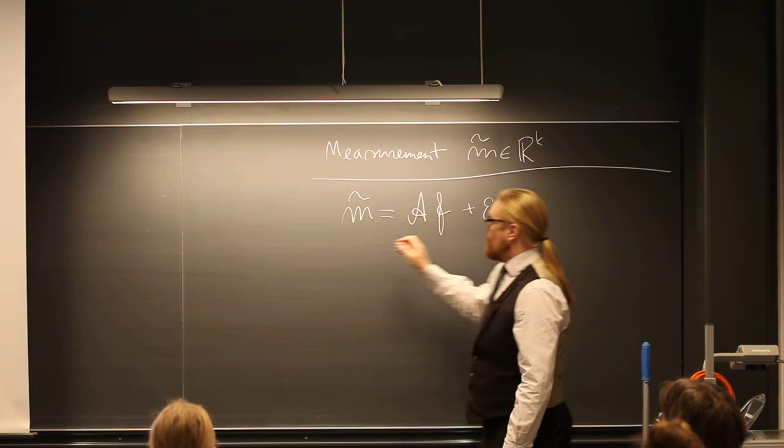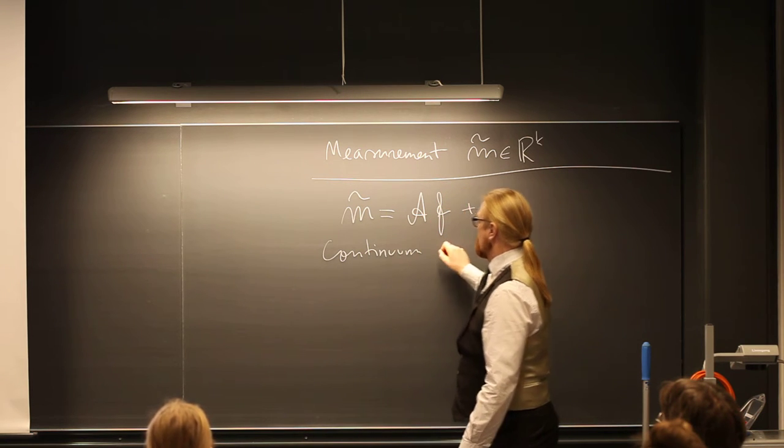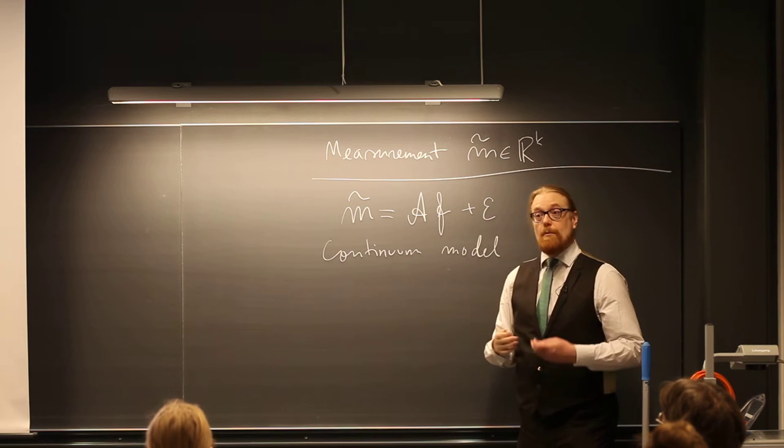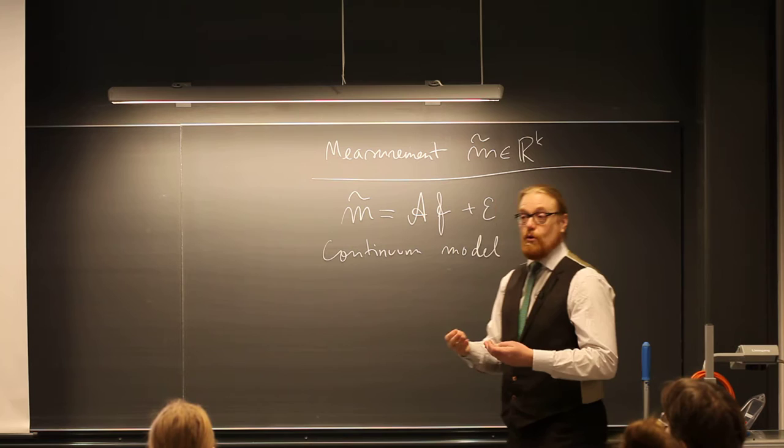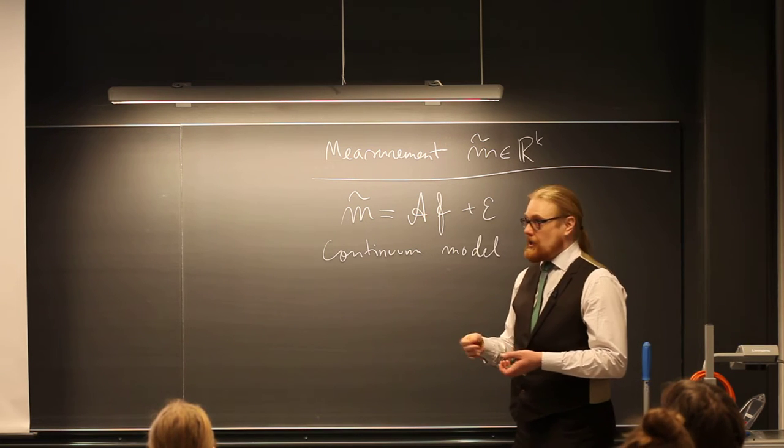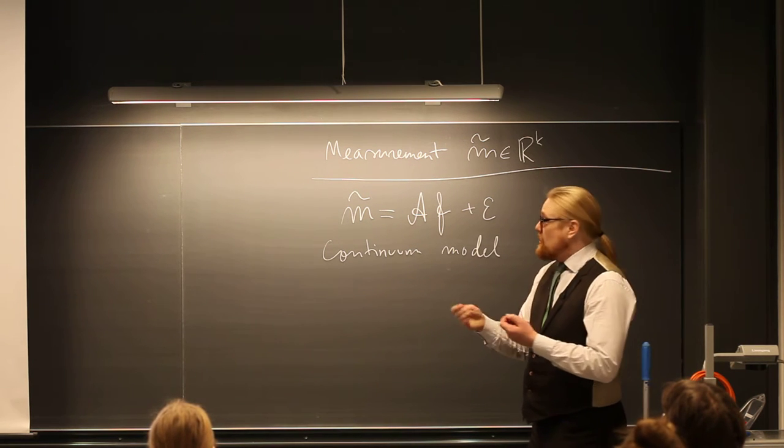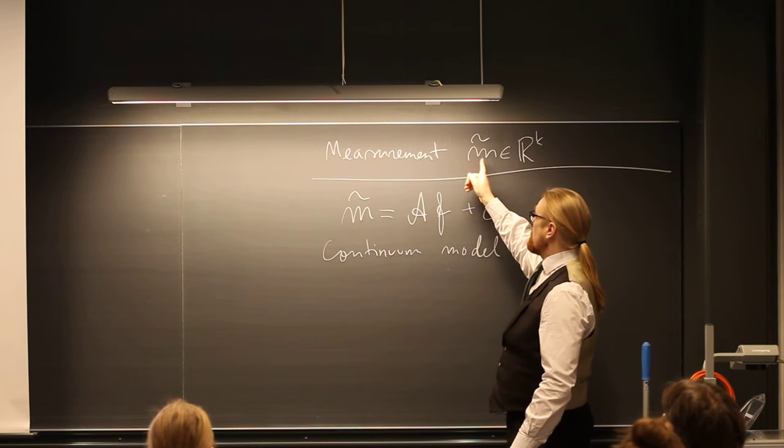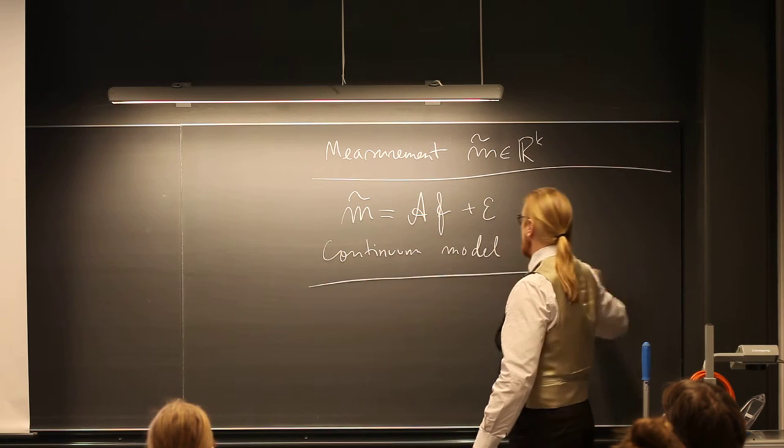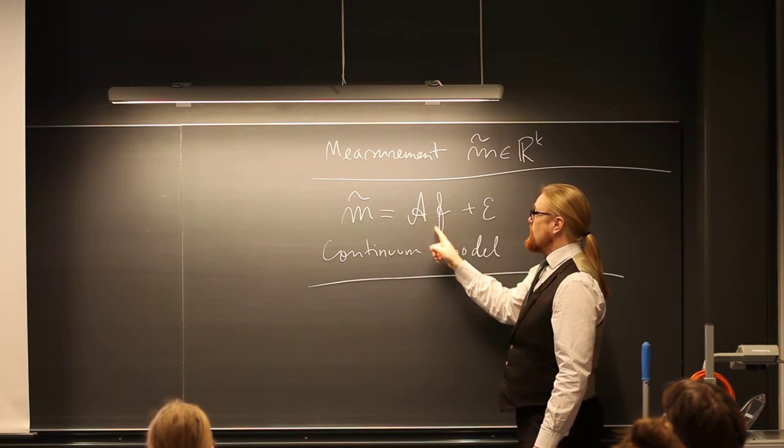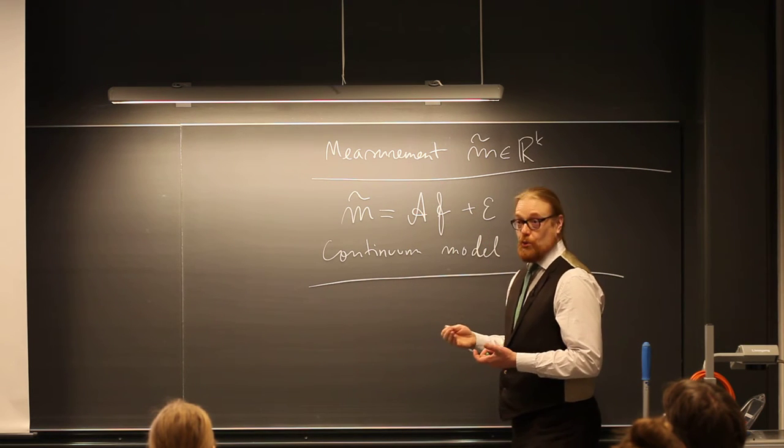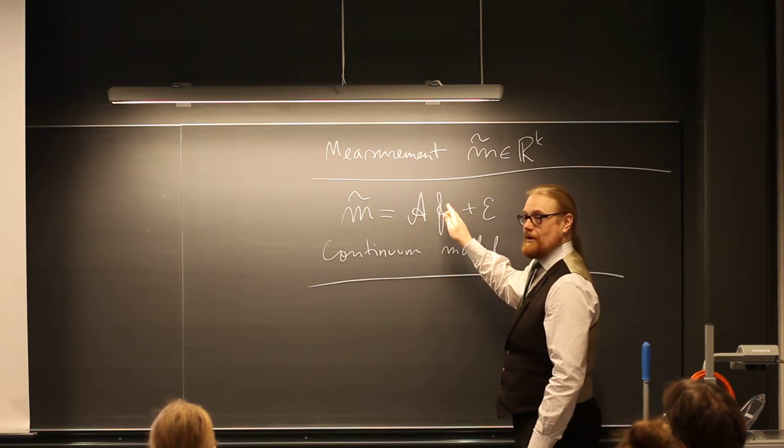This I call the continuum model with the idea that this comes from some kind of physical process we cannot ever analyze in all detail. This is something we use mathematical physics like partial differential equations or some integrals or any mathematical tools we have to model this measurement process as closely as possible. And the idea is that this f-beautiful is a function defined on R^n or maybe an interval or subset of R^n, so it's kind of a continuum object. It's not discrete, it's an infinite dimensional thing this f.